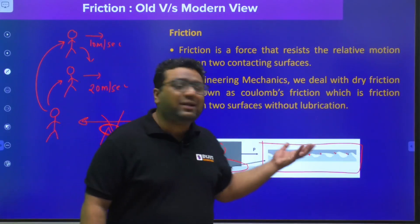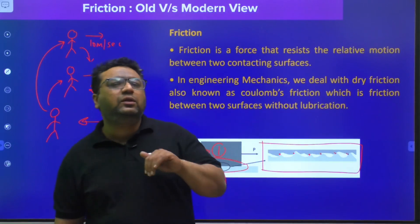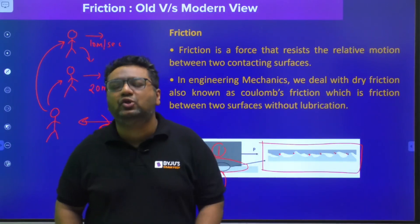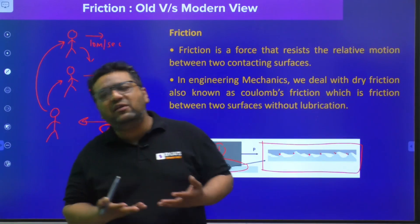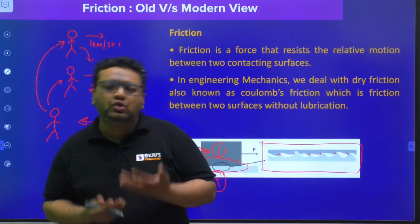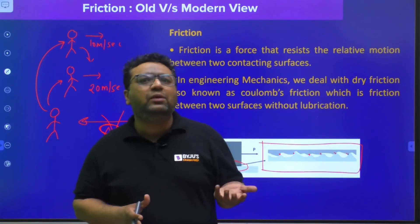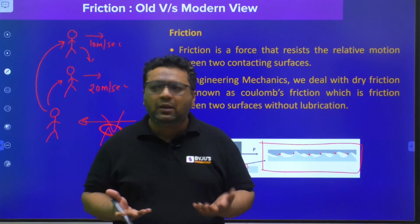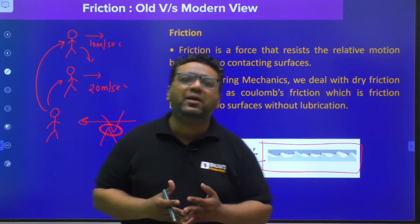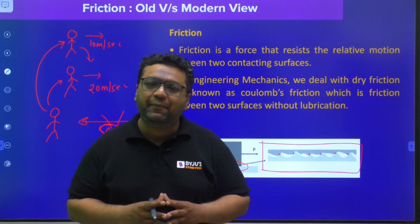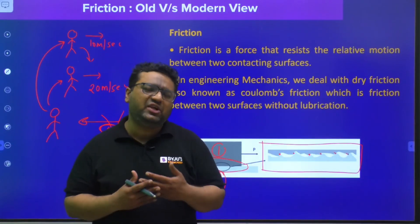When this was the assumed reason — the old view — there were two points where it was unable to explain observations. First, friction was found to be independent of area. If area were larger, more irregularities would be present, meaning more friction. So friction should be a function of area. But according to the laws of friction, friction is independent of area. This was the first challenge to the old view.